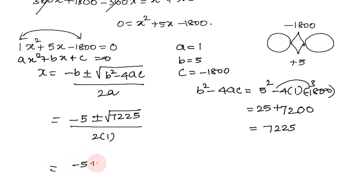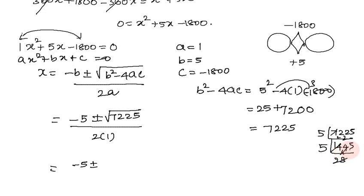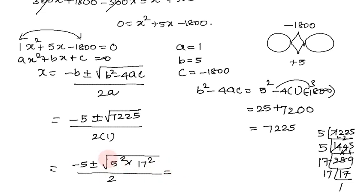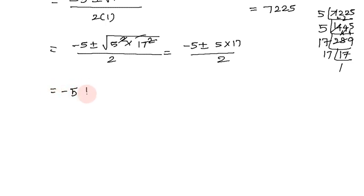Substituting into the formula: x equals minus 5 plus or minus root of 7225, divided by 2. Finding the square root of 7225: its prime factors are 5 squared times 17 squared, so the square root is 5 times 17 equals 85. Therefore x equals minus 5 plus or minus 85, divided by 2.